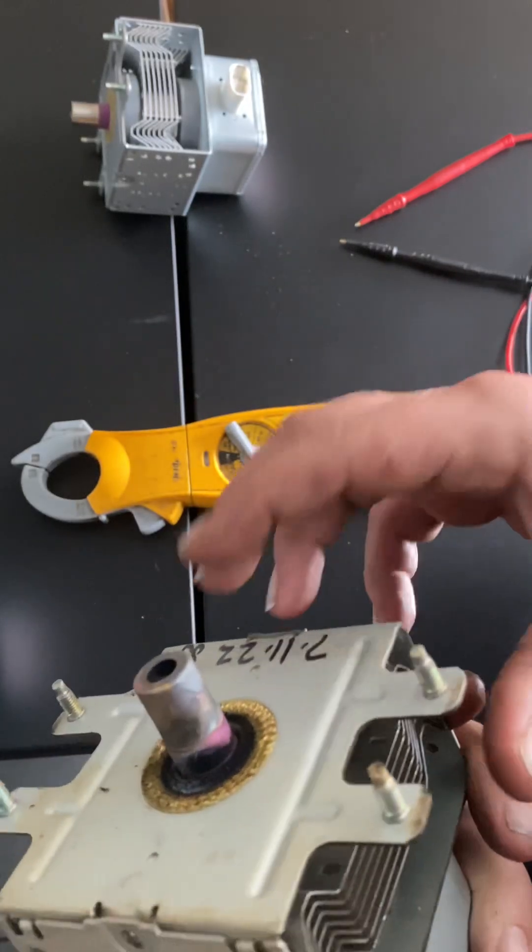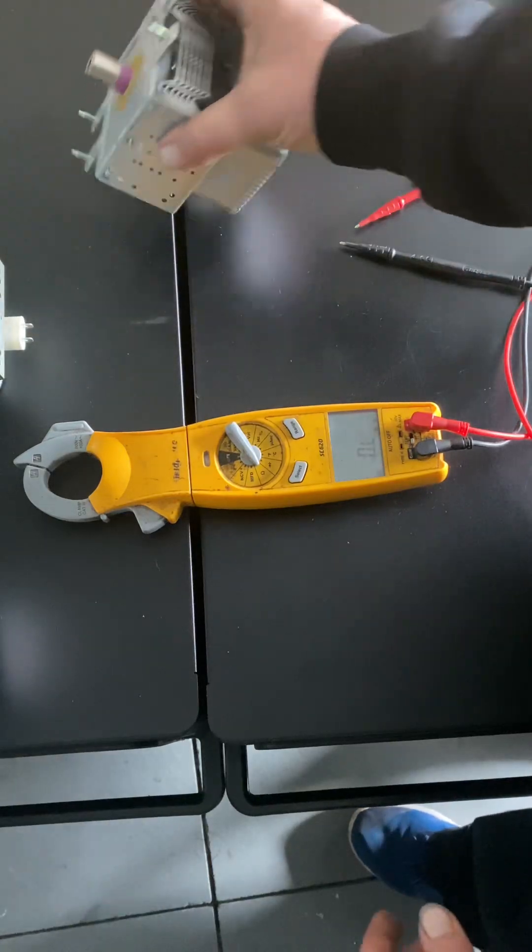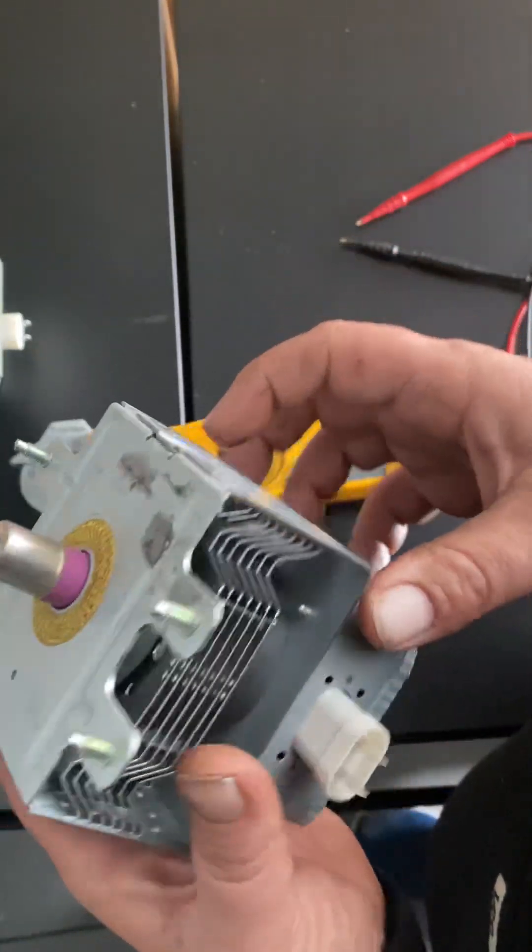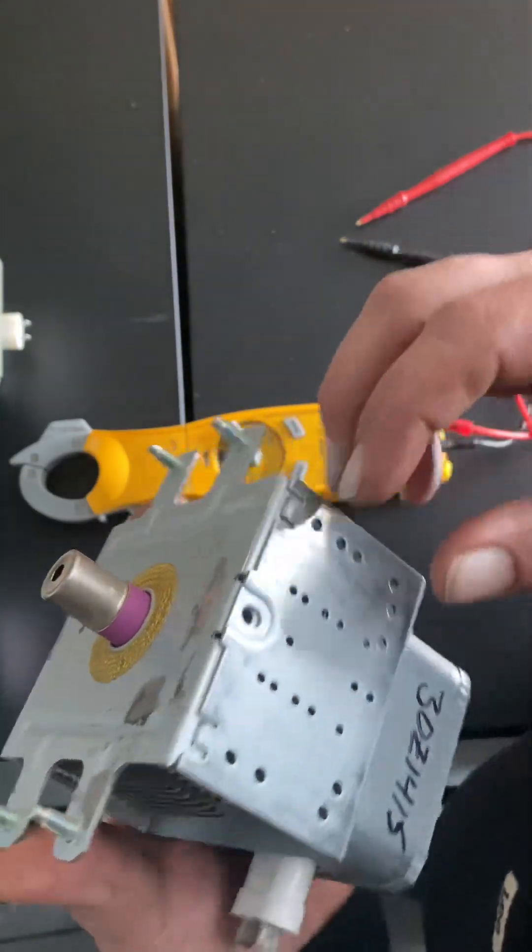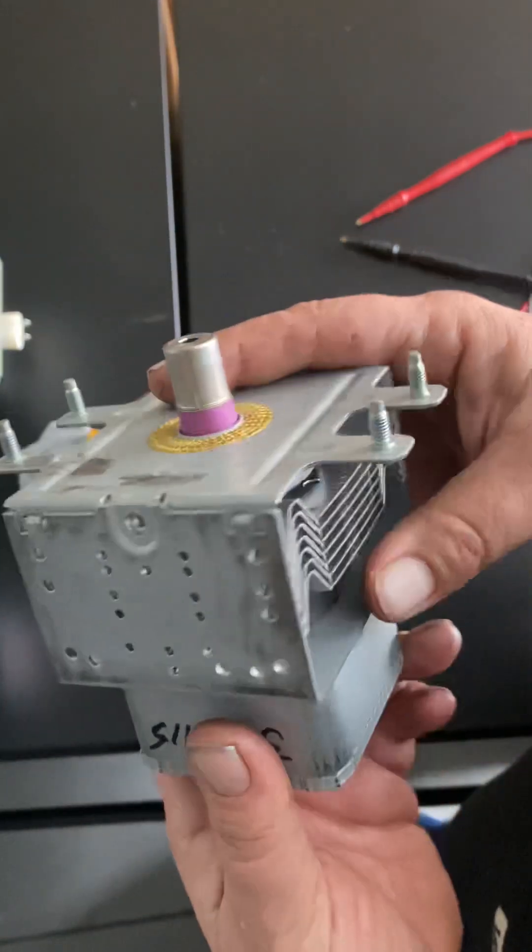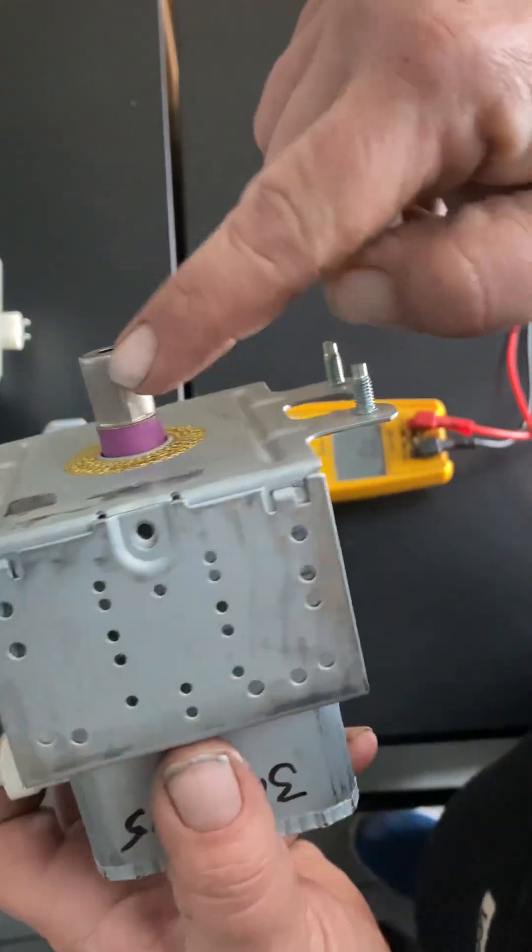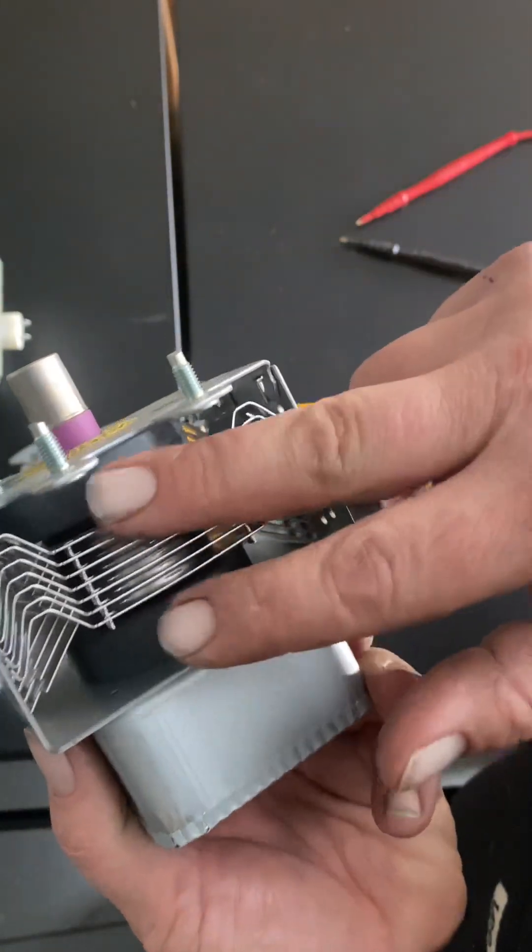This is definitely another failure. But how come they passed? Well, it doesn't always mean that it passes so it means that it's a good mag. You got to pull them and you got to look and you got to test them and you got to look for damage around the antenna on the magnetron.